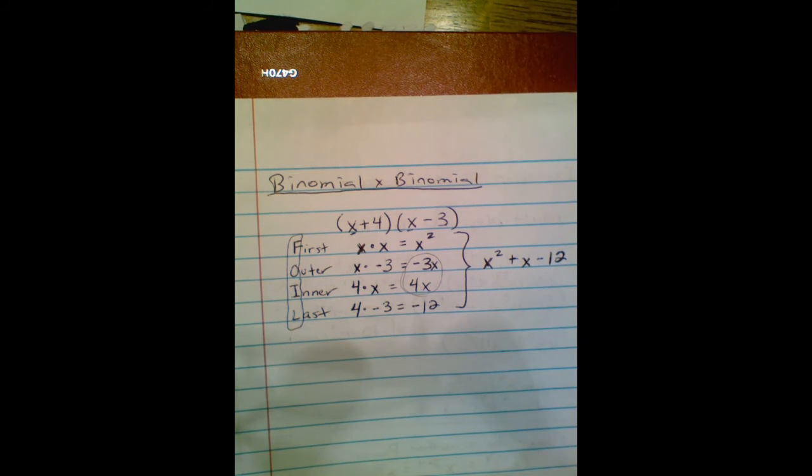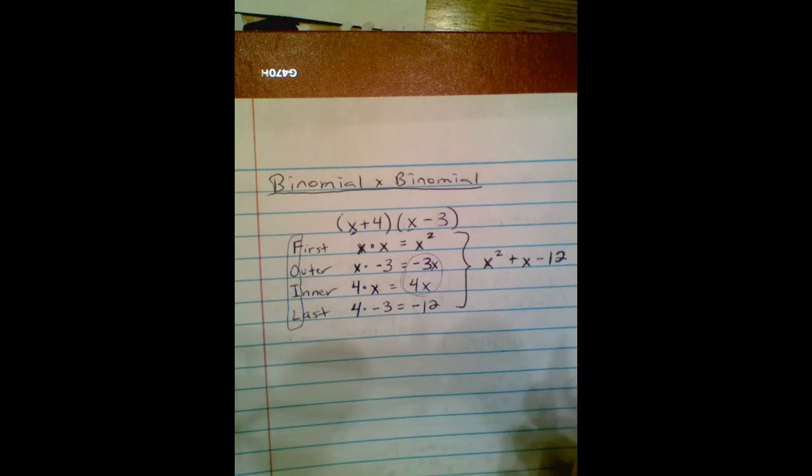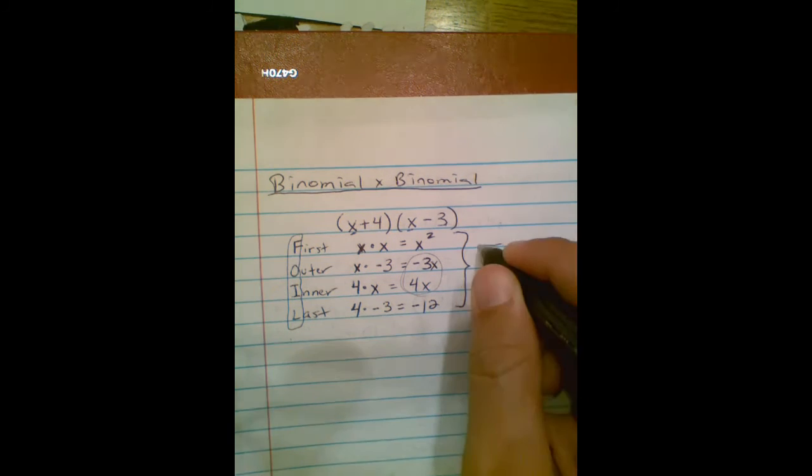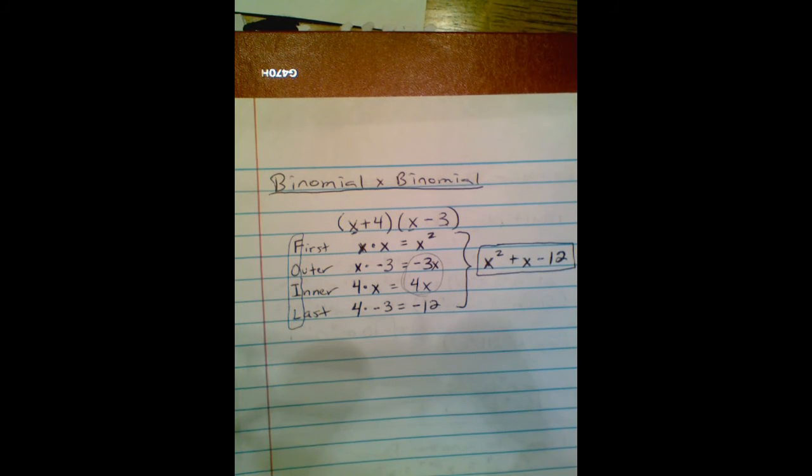You can put a 1 there if you want to, it's not wrong, you just don't need it. And then the minus 12 at the end is the only constant, so it comes over there. And here is your expanded polynomial.